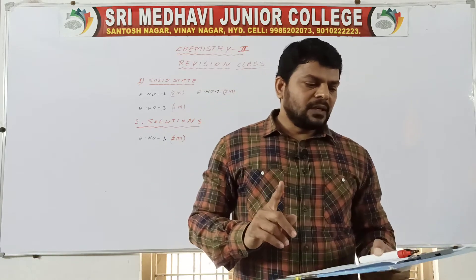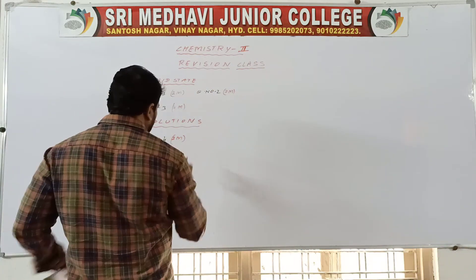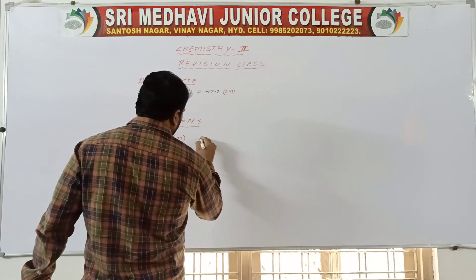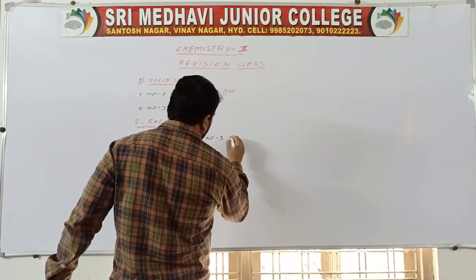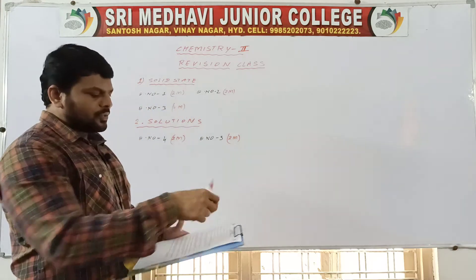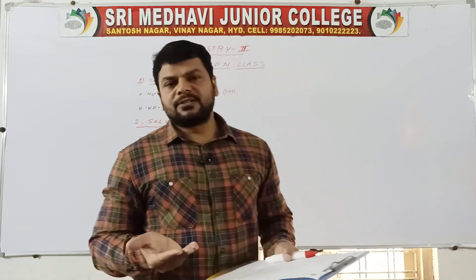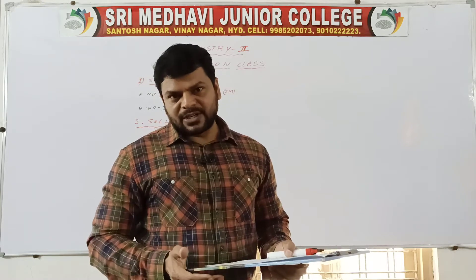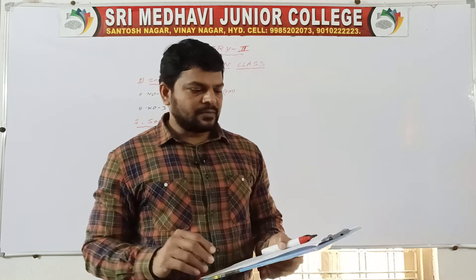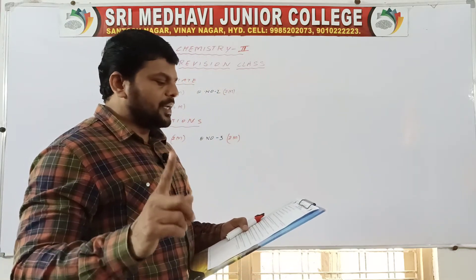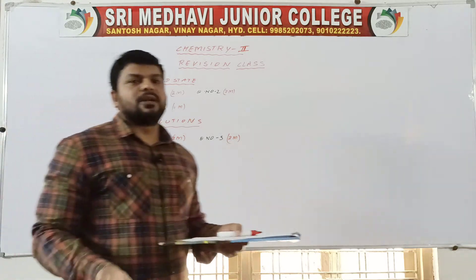Question number five is also a two marks question — isotonic solutions. What are isotonic solutions? The solutions having the same osmotic pressure at a given temperature are called isotonic solutions. Write one example — that is enough. It is from solutions, question number 14, page number 30. Two marks indicates a very short answer; four marks indicates a short answer.